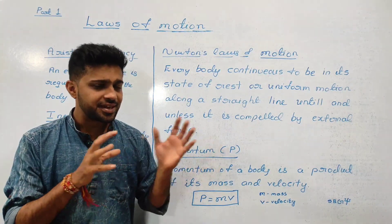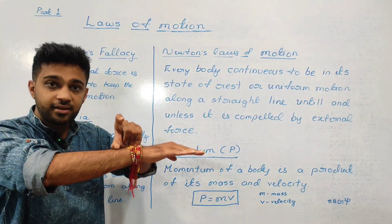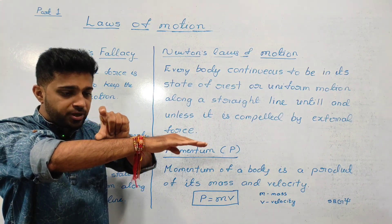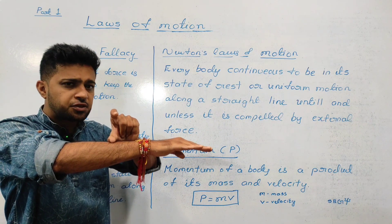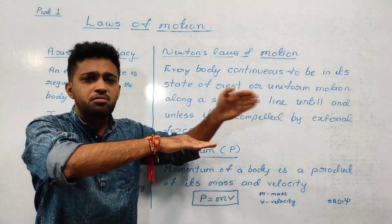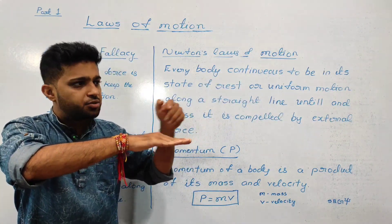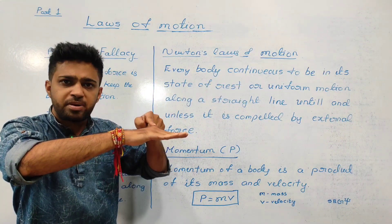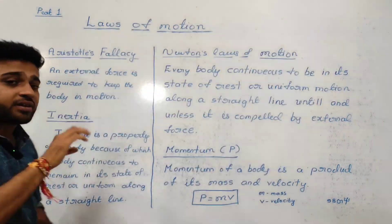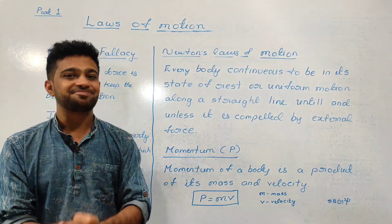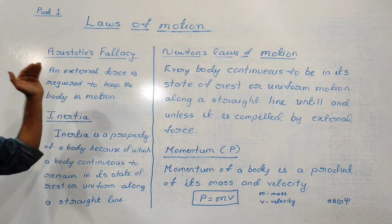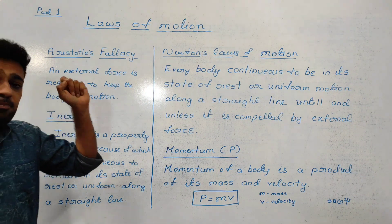If the object is in motion, force can be applied to keep it in motion, but if you stop the external force applied, the body would stop. For example, if you have a tyre and you roll it with force applied, it moves on. If you stop the force applied, it stops. So Aristotle's fallacy says an external force is required to keep the body in motion.